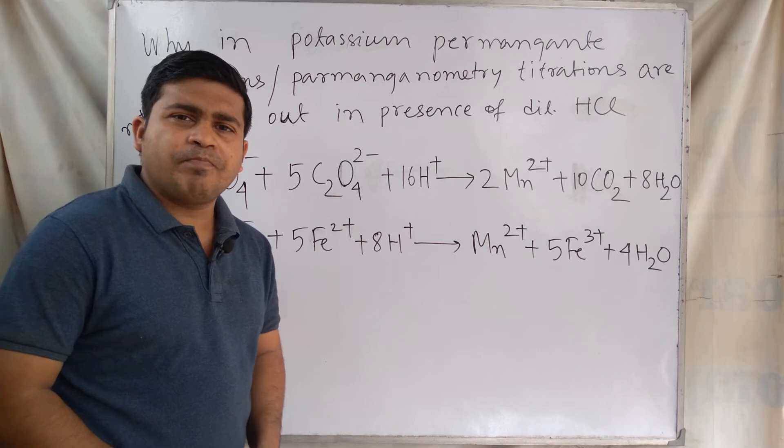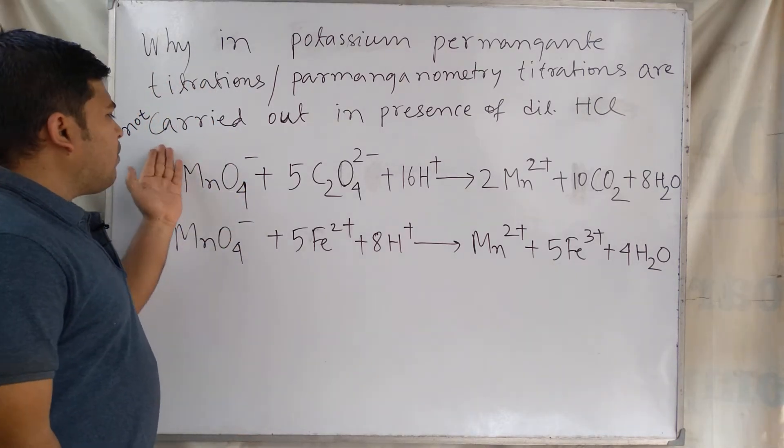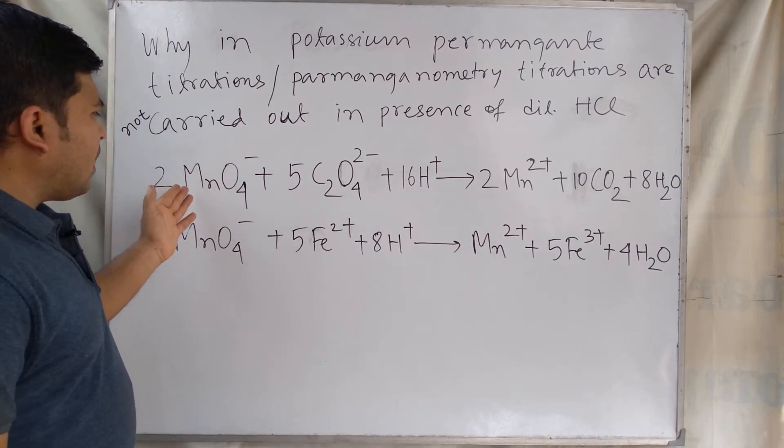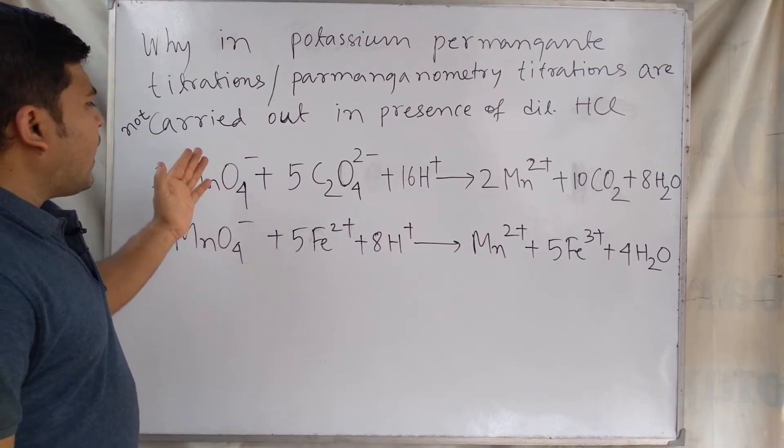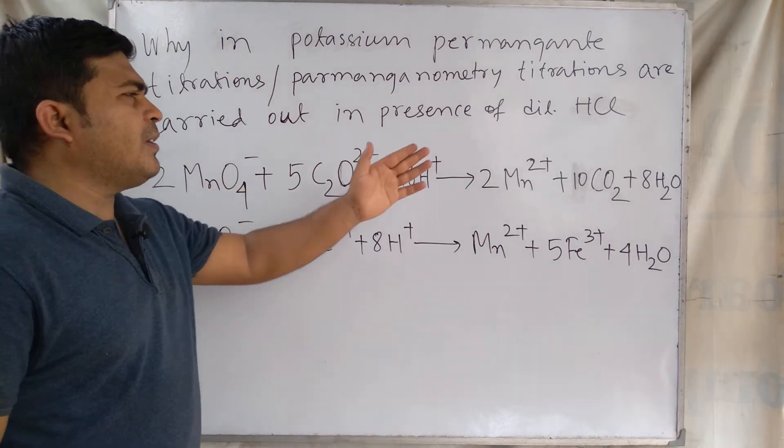What happens? Potassium permanganate ion is an oxidizing agent, so it oxidizes the chloride ion to chlorine gas.